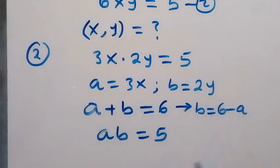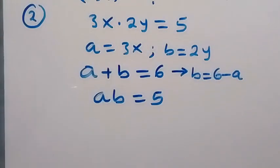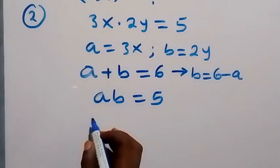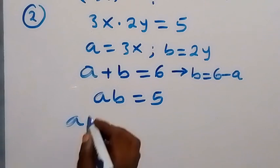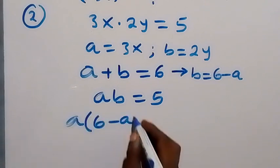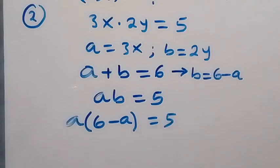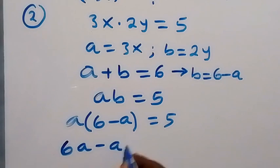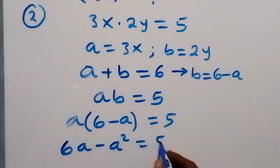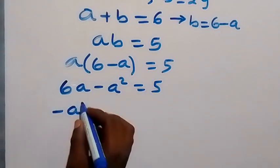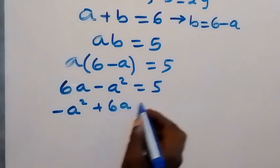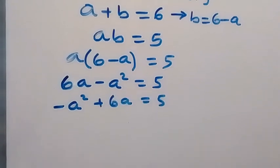In the next step, we substitute b equals 6 minus a into equation 2. So we have a multiplied by (6 minus a) equals 5. Opening the bracket gives us 6a minus a squared equals 5. Rearranging, we bring 5 to this side: minus a squared plus 6a equals 5.